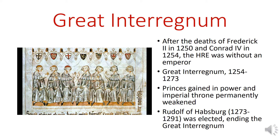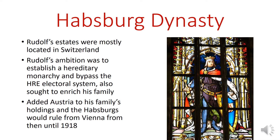However, Rudolf would have less power than Conrad IV, and he would never really recover the kind of authority that Conrad and his father Frederick had enjoyed. When he was elected as Holy Roman Emperor, Rudolf of Habsburg was not the biggest player in the game by any stretch of the imagination, and most of his estates were located in Switzerland, so he was on the periphery of the imperial world. But Rudolf had a lot of ambition, and he wanted to establish a hereditary monarchy powerful enough to bypass the Holy Roman Imperial Electoral System, and he also wanted to enrich and empower his family so that they could control this electoral process.